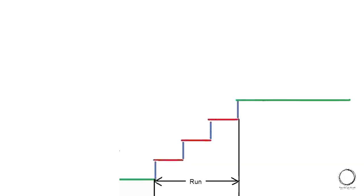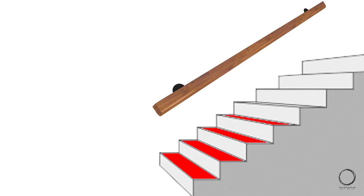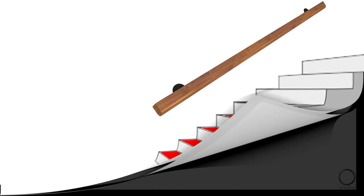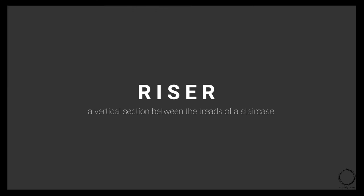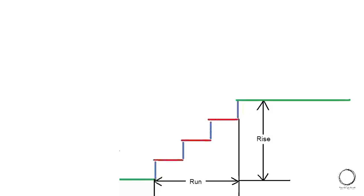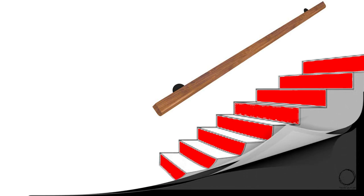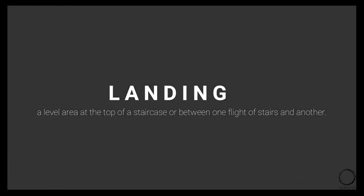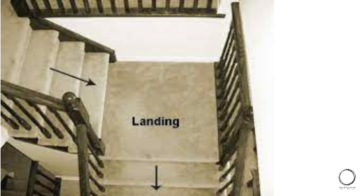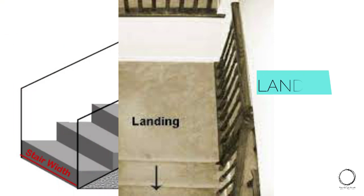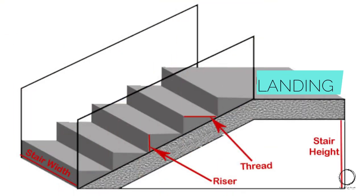Now let's look into the terms used in staircases. Tread is the top surface of a step — the horizontal part where you keep your foot while climbing. Riser is the vertical section between the treads of a staircase — the vertical surface that takes you to the next tread. Landing is a level area at the top of a staircase or between one flight of stairs and another — it acts as a stop or pause between all the stairs.